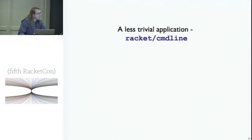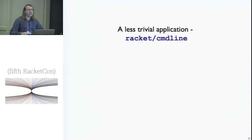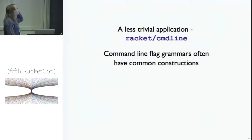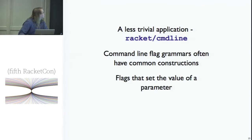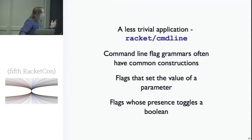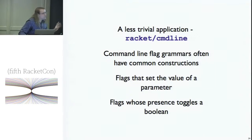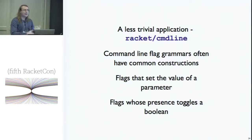For something a little less trivial: how many people have used the Racket command line parsing library? How many found it kind of brittle, where you have to do some weird stuff to get things dynamic? Command line flag grammars often have a lot of really common patterns you repeat over and over, and it's really hard to abstract over those. Some of these are flags that just toggle a parameter — when you pass them, they set a parameter to true or false or something. It would be really nice to have easy ways to pull out those patterns into their own little macros in command line, with nice special syntax for those specific cases.